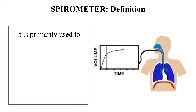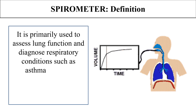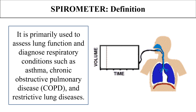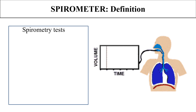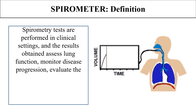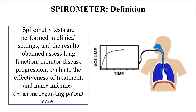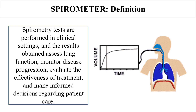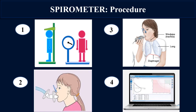It detects if the lungs are working properly. Sometimes destruction and narrowing of the pulmonary tubes takes place in certain conditions such as asthma, chronic obstructive pulmonary disease, and some restrictive lung diseases. Along with detecting lung functions, spirometry has other purposes: monitoring disease severity, evaluating if treatment is working, and informing decisions about patient care — whether surgery or medication is needed.